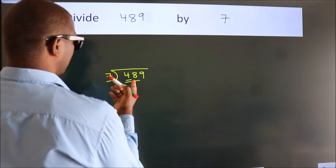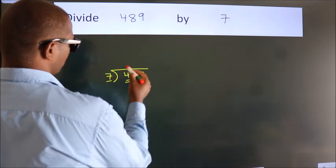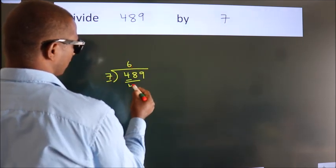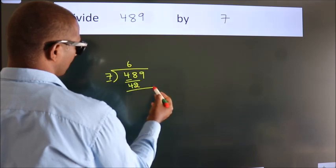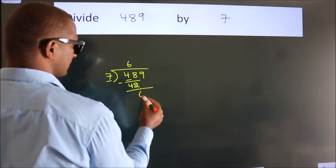A number close to 48 in the 7 table is 7 times 6, which is 42. Now we should subtract. We get 6.